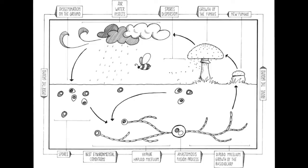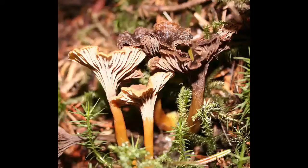Basidiomyceta that reproduce asexually can be recognized as members of this phylum by gross similarity to others, by the formation of a distinctive anatomical feature called the clamp connection, cell wall components, and definitively by phylogenetic molecular analysis of DNA sequence data.